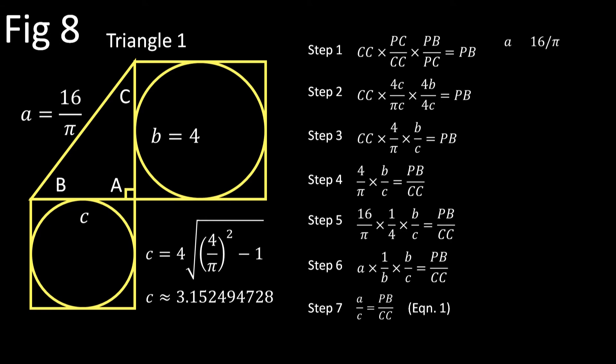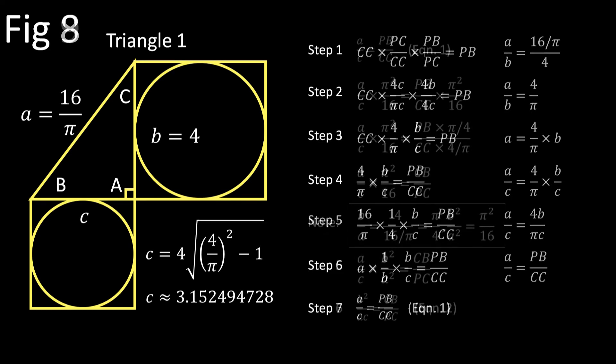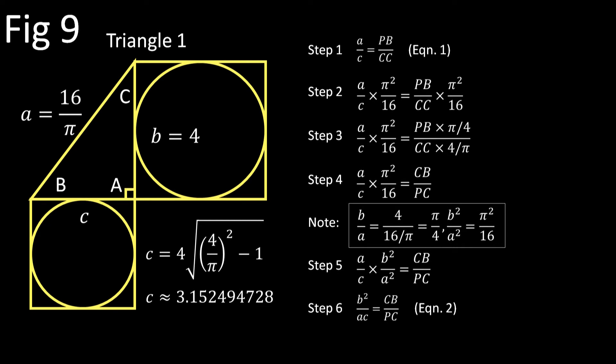Now I would have taken a more direct approach using the a/b identity Wolham gives us in his Figure 7, but in this situation I suppose it's not the journey that's important, just the destination. Here Wolham does some real hocus pocus. In Step 2 he multiplies each side by π² over 16. That's okay—we can multiply each side of an equation by the same constant or variable, for that matter, and it doesn't change the equation. This constant simply gets sucked into the variable ratio on the right.